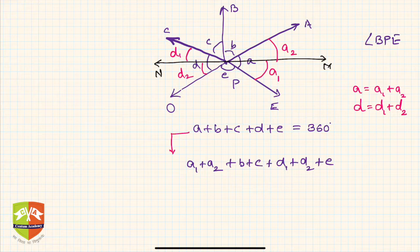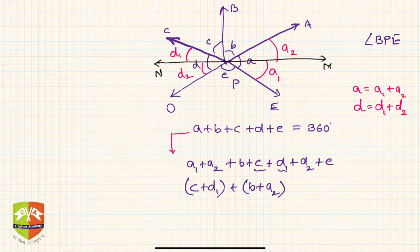Now I can club few of them. So this entire thing can be rewritten as c plus d1 within brackets, plus b plus a2, then d2 plus e, so I am clubbing d2 plus e together. What is left? Only a1, plus a1. If you look carefully, the same thing is written here.